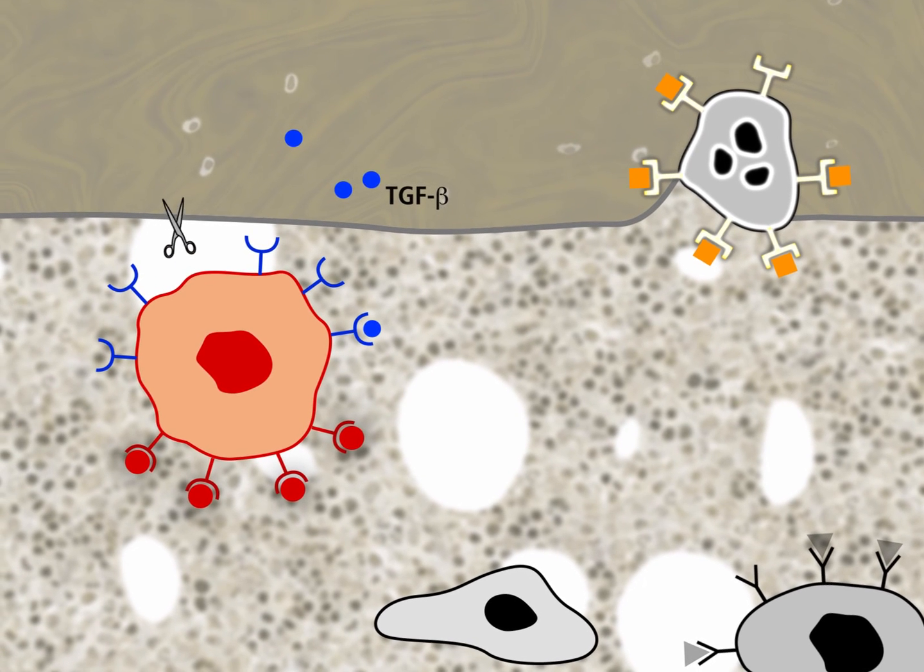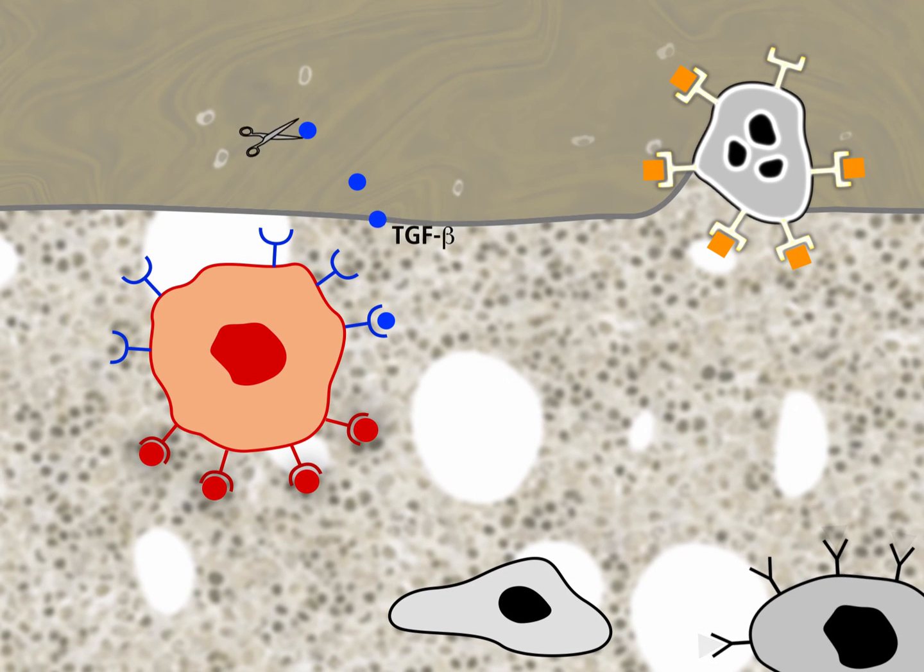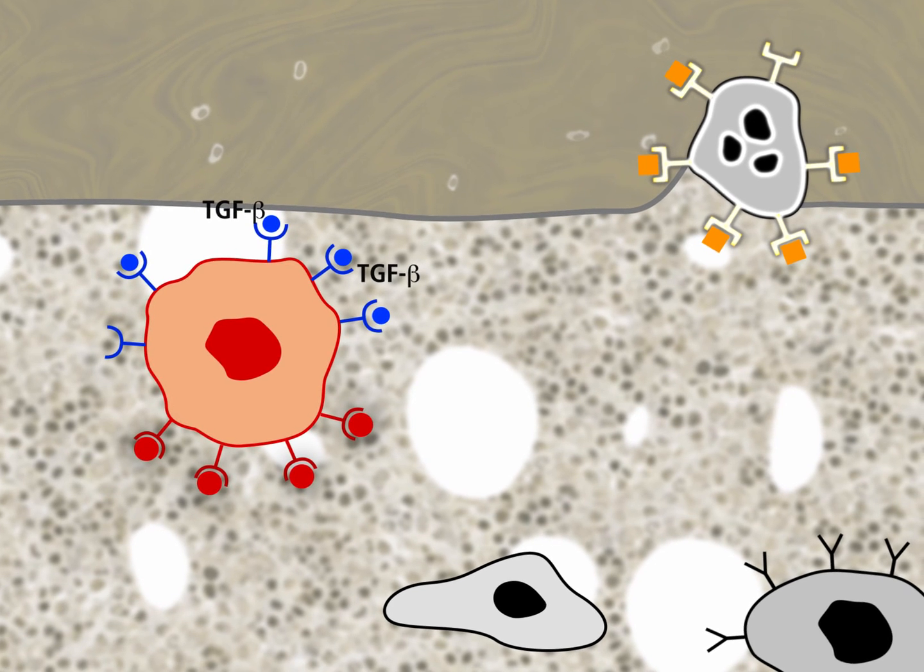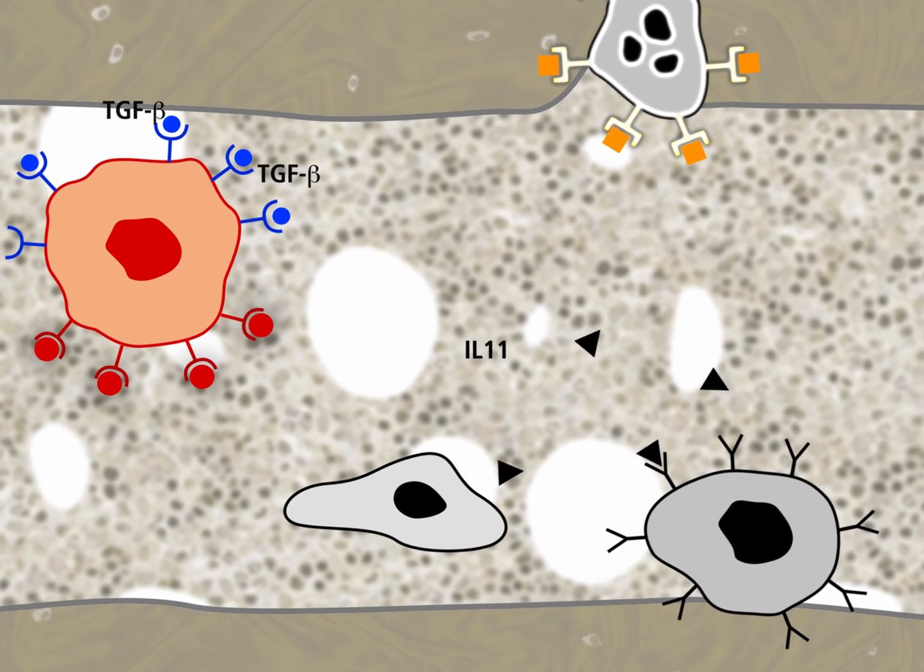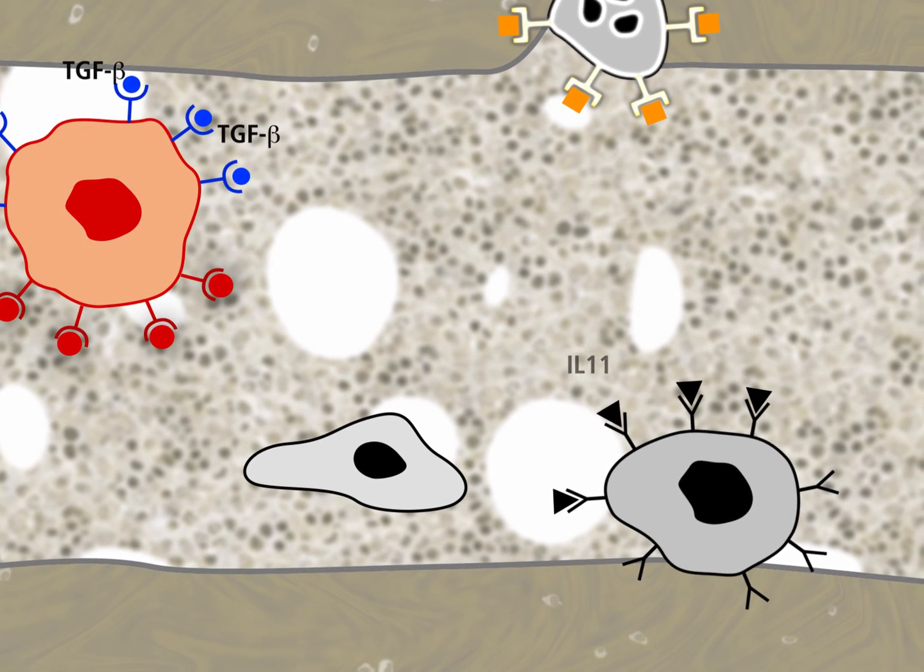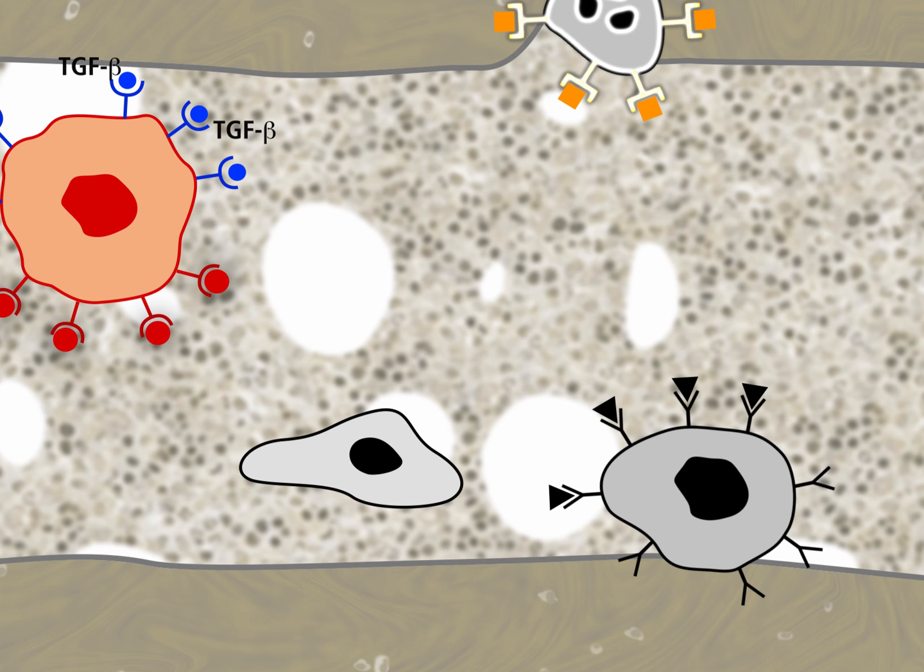Additional TGF-beta is liberated by matrix metalloproteinase 1, which is synthesized by the mammary carcinoma cells. TGF-beta binds to TGF-beta receptors of the mammary carcinoma cells and induces the synthesis of interleukin-11. The vicious cycle is completed and the degradation of bone matrix continues.